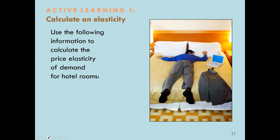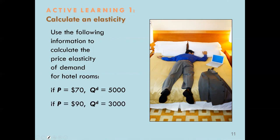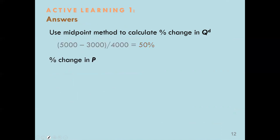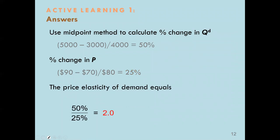Now let's consider an active learning example. Use the following information to calculate the price elasticity of demand for hostel rooms: if price equals $70, quantity equals 5,000; if price equals $90, quantity demanded is 3,000. Using the midpoint approach, the percentage change in quantity is 50 percent and the percentage change in price is 25 percent, so the price elasticity of demand is 2.